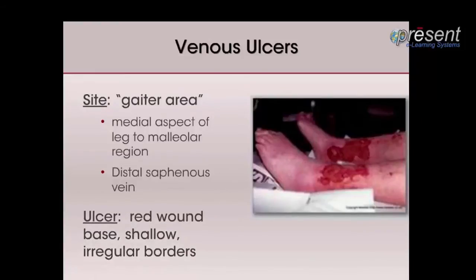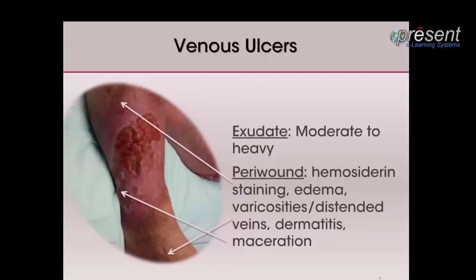The visual characteristics of a venous leg ulcer include a shallow wound bed that may be large with a red wound base and irregular borders. There may be a yellowish fibrinous layer covering the wound bed. Venous ulcers typically have moderate to heavy exudate, and the peri-wound tissue usually involves hemocyterin staining.